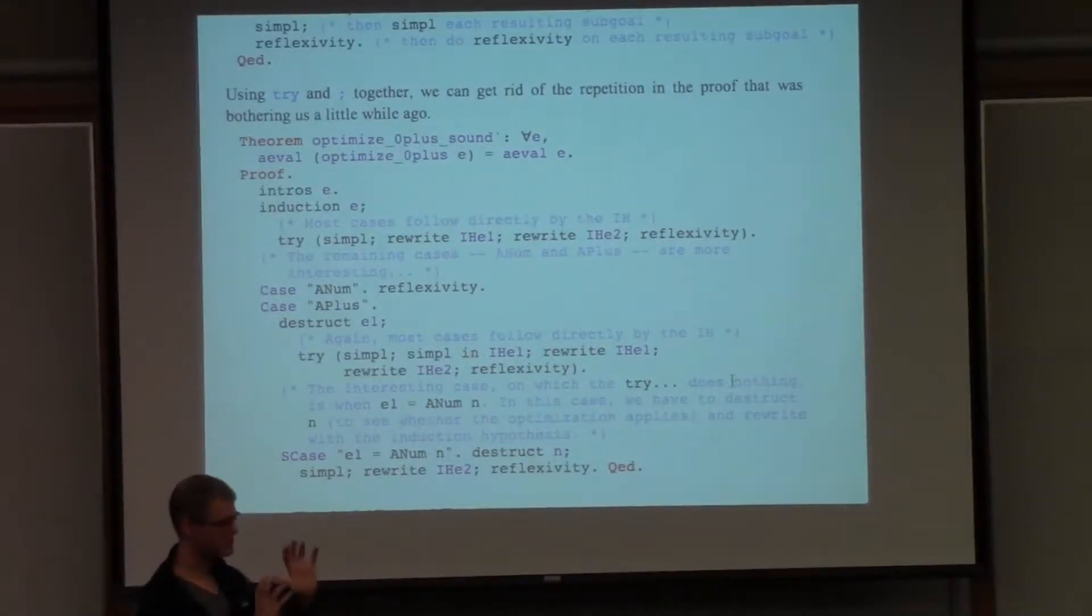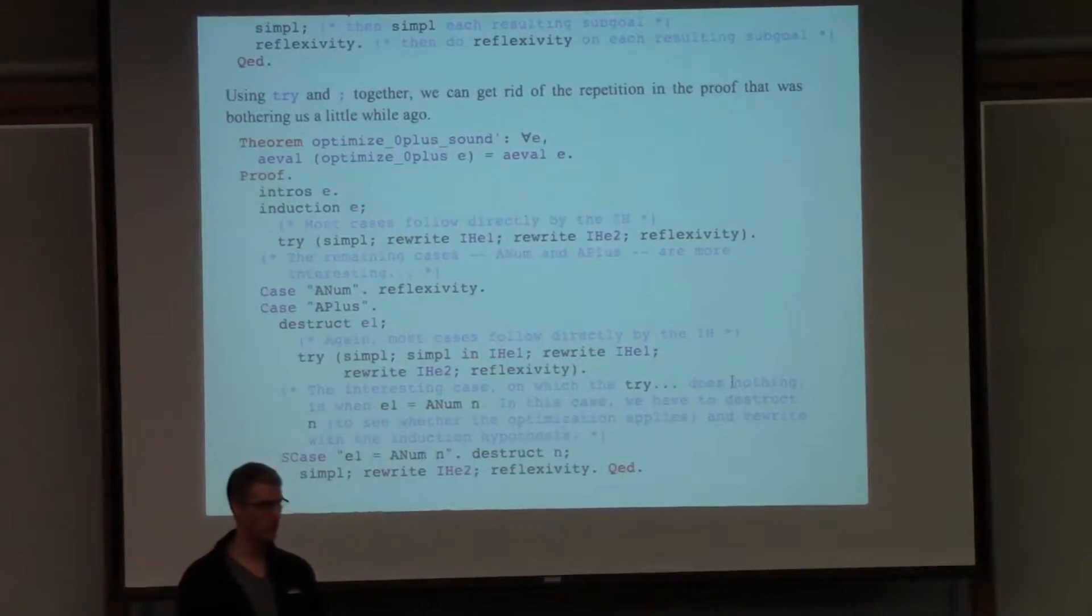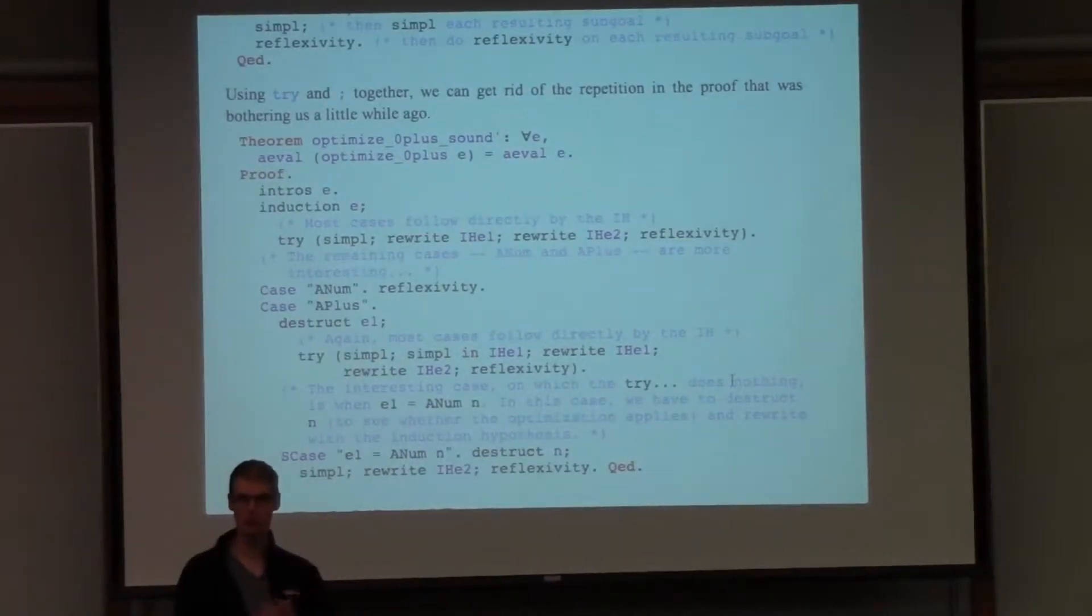But once you start crunching things down, it can be a little bit difficult to understand what's actually happening in your proof. So it's better to write it out in the way that you understand and then figure out what crunching needs to happen to make it short.